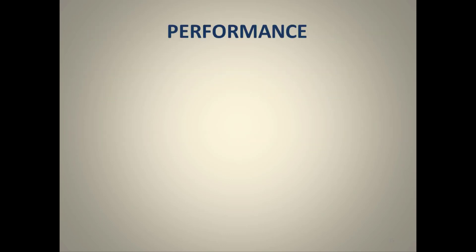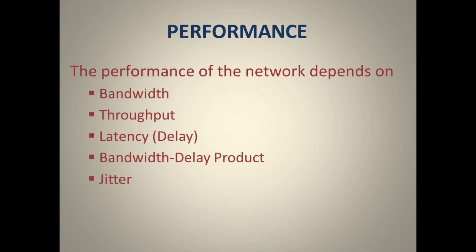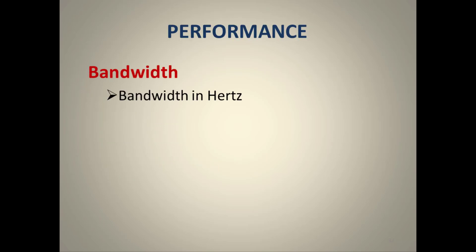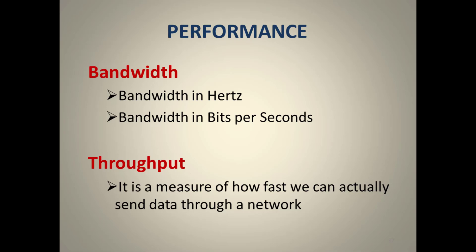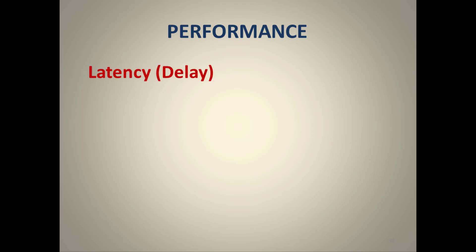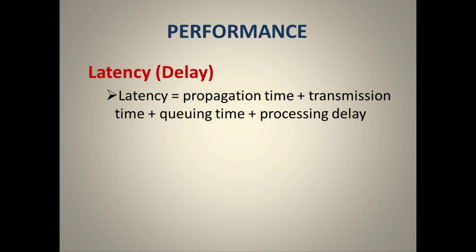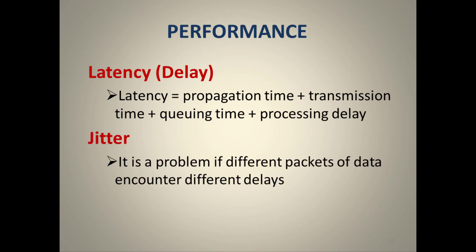Network performance depends on factors including bandwidth, throughput, latency, bandwidth-delay product, and jitter. Bandwidth is measured in Hertz or bits per second; more bandwidth means more data can be sent. Throughput is how fast data can actually be sent. Latency (delay) is the sum of propagation time, transmission time, queuing time, and processing delay. Jitter occurs when packets sent in sequence arrive out of order at the receiver.